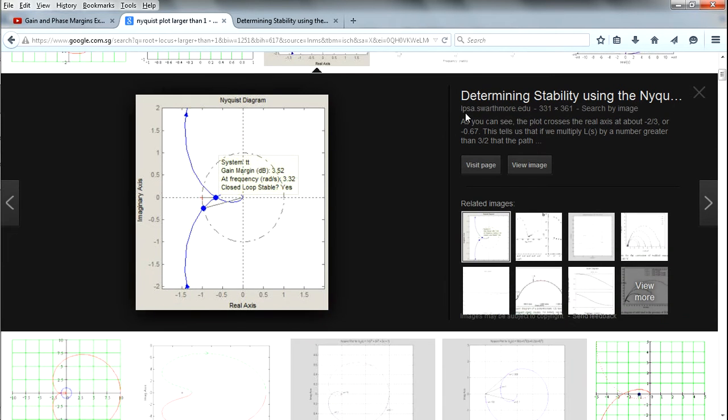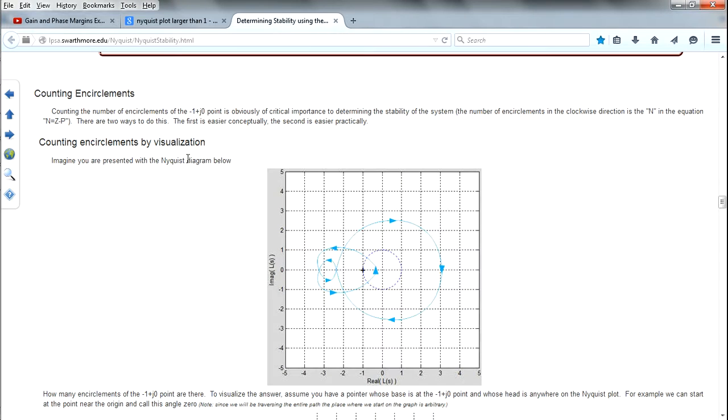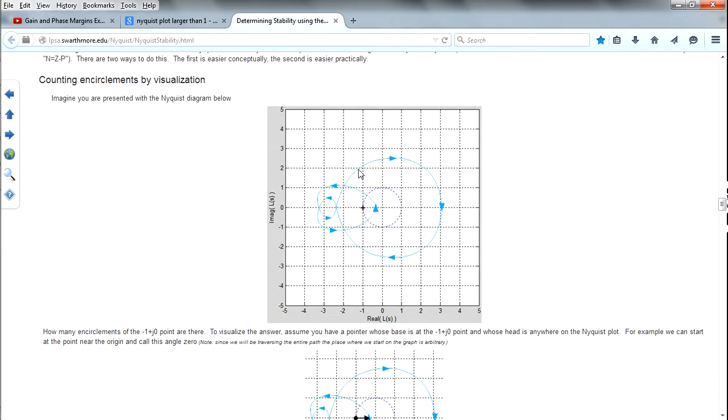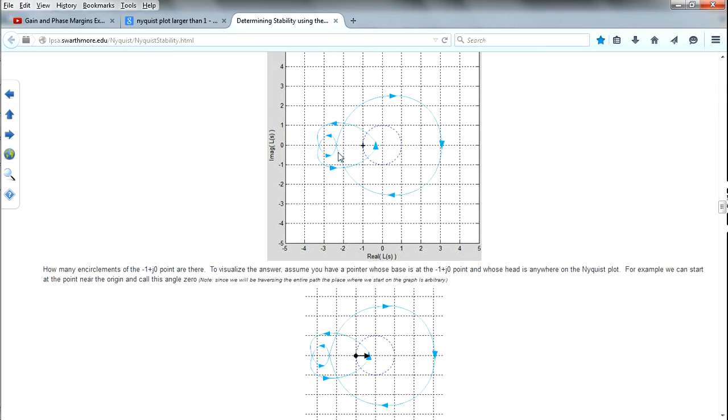And then you can see... if you were to come down here, you can scroll down in this portion. You can actually see this thing. So it will teach you how many encirclements you have, so that you can actually deduce how many poles and zeros.